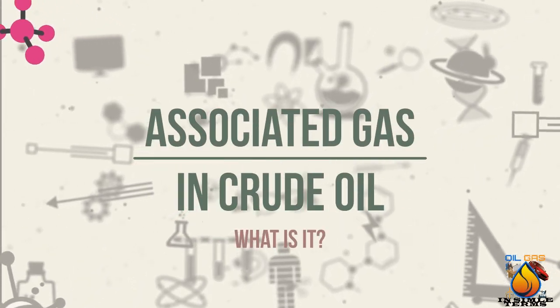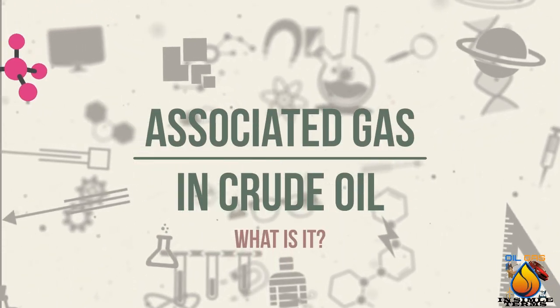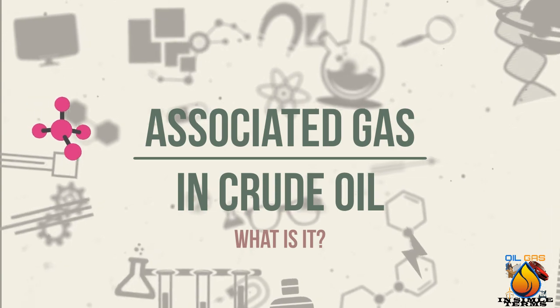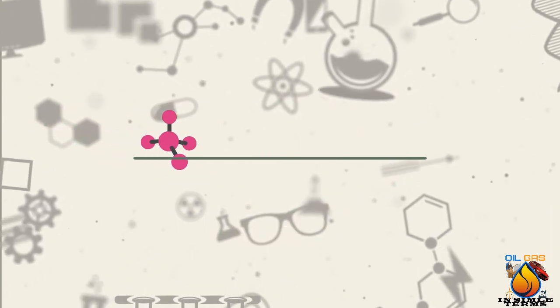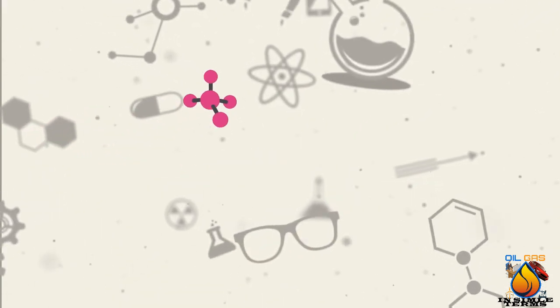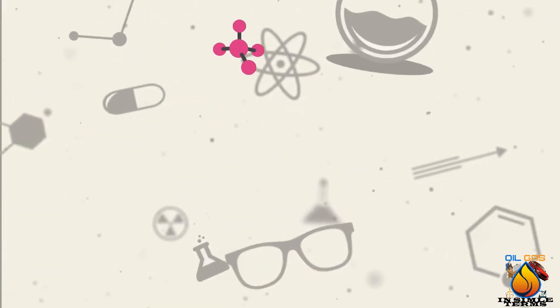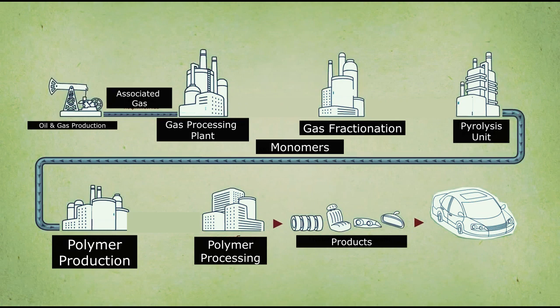Associated gas dissolved in crude oil — what is it and what do we do with it? The associated gas is the same as natural gas, but with a large amount of impurities.